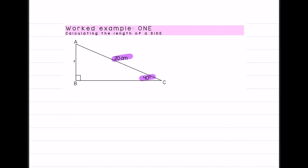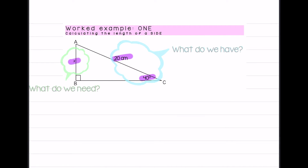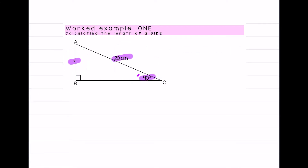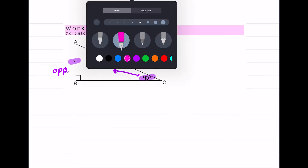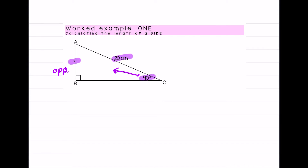Looking at our first example, the first thing we do with trig when calculating an unknown is ask: what do we have and what do we need? We have the angle 40°, the value 20, and x. With angle 40° as our reference: x is opposite to 40°, and the 20 is opposite the right angle — which means 20 is the hypotenuse.